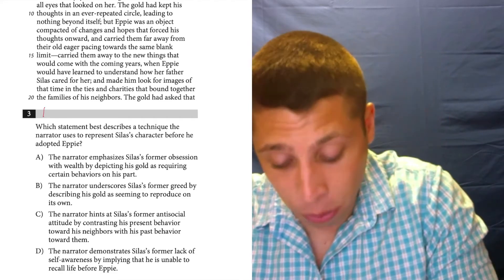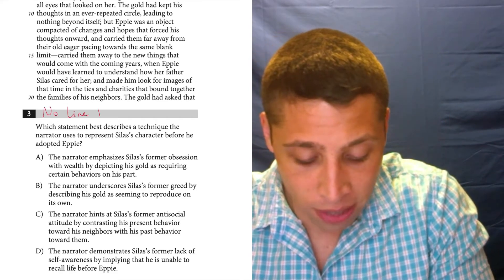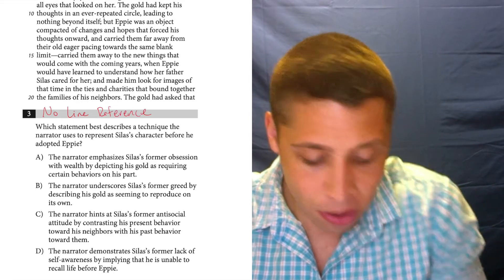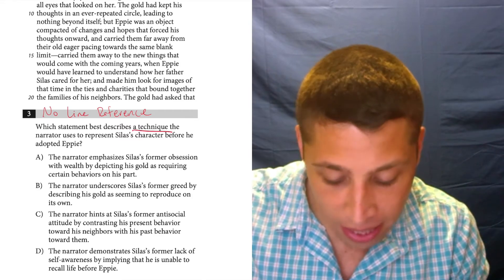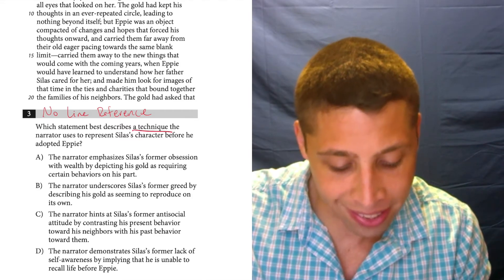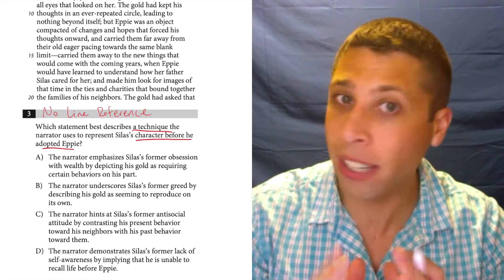Number three is another one of these no line reference questions. And I know this because it's not asking for something general, it's asking for something very specific: a technique the narrator uses to represent Silas's character before he adopted Epi. It's very narrow.